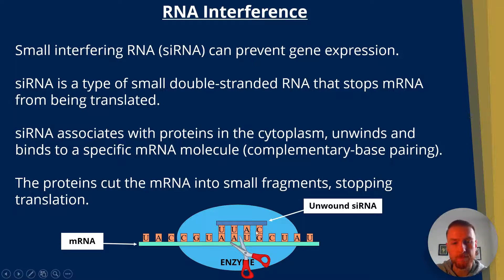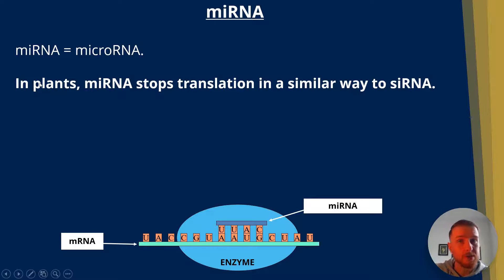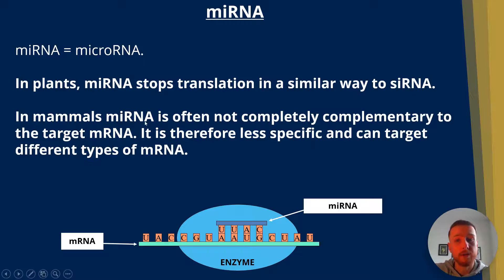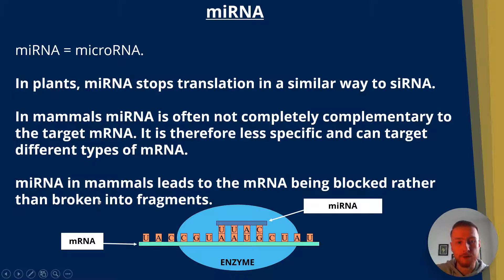The mRNA will be cut into fragments, preventing translation. Next, miRNA — microRNA. In plants, microRNA stops translation in a similar way to siRNA by breaking down mRNA. In mammals, however, microRNA is often not completely complementary to the target mRNA, so it is less specific and can target different types of mRNA from different genes. miRNA in mammals leads to the mRNA being blocked rather than broken into fragments, so the enzyme blocks translation rather than breaking down the mRNA.